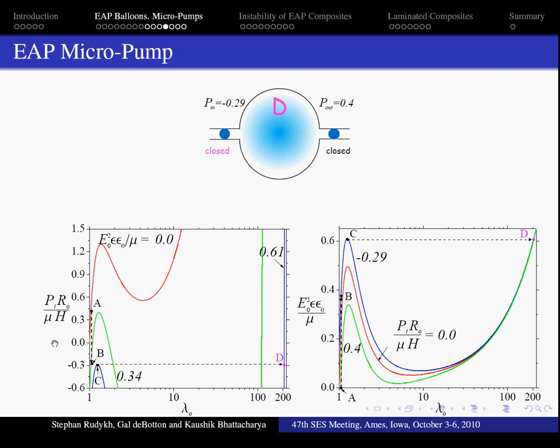Now we begin to decrease the electric excitation. The inner pressure increases due to the elasticity of the balloon, as long as the pressure is lower than P_out.